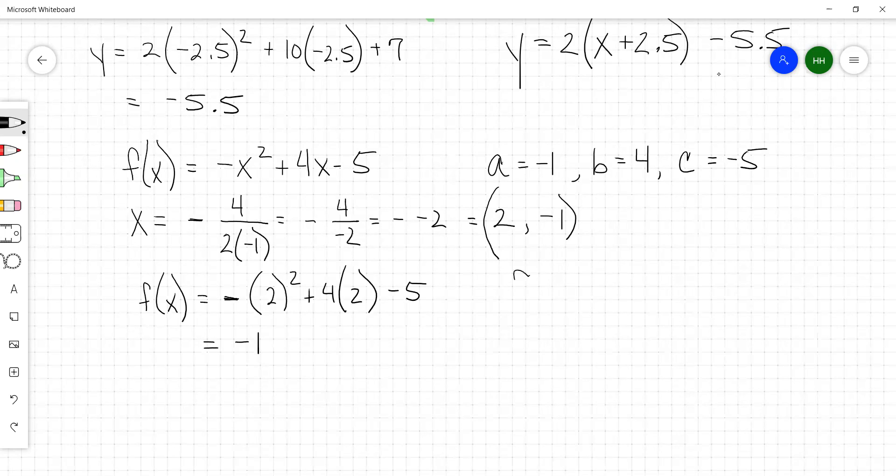So our y at the vertex is negative 1. So our function of x in vertex form is equal to negative (x minus 2)² minus 1.